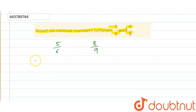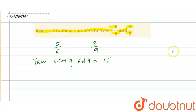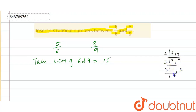First of all, we take the LCM of 6 and 9. Taking the LCM: 2 divides giving 3 and 9, then 3 divides giving 1 and 3, then 3 divides giving 1 and 1. So LCM is 3 multiplied by 3, which is 9, multiplied by 2 is 18. So the LCM of 6 and 9 is 18.